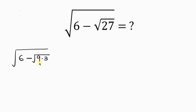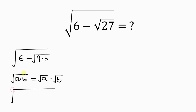Our next step will be for us to separate what we have here, since we know that the square root of a times b is the same as the square root of a times the square root of b. So this expression can now be simplified as the square root of 6 minus the square root of 9 times the square root of 3.